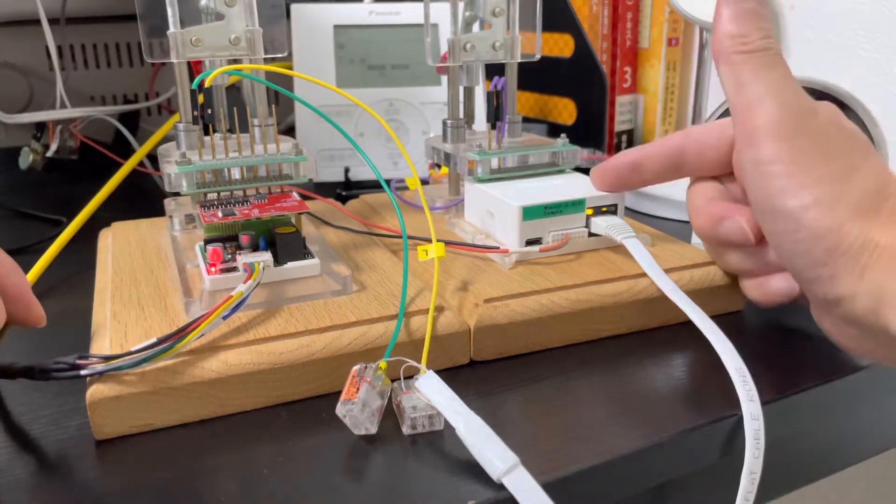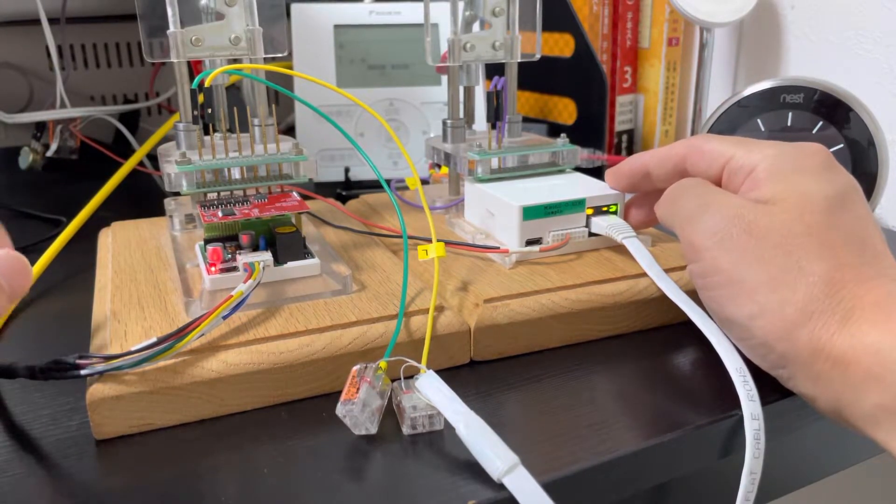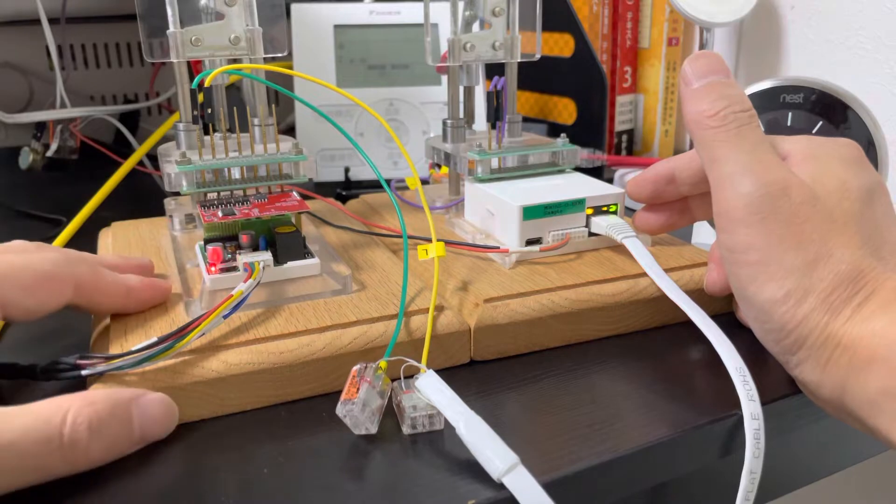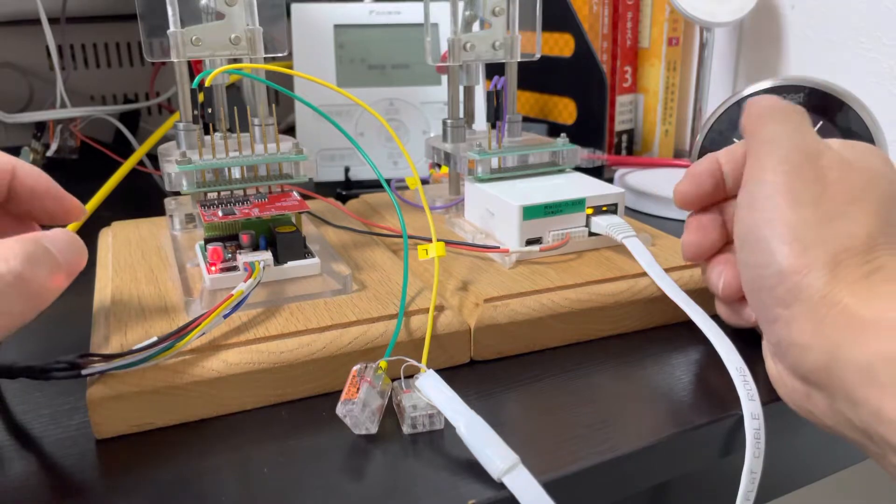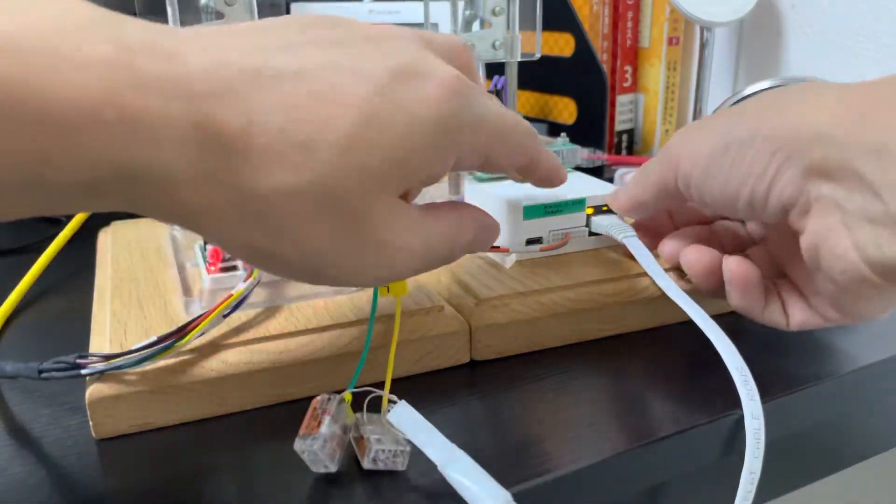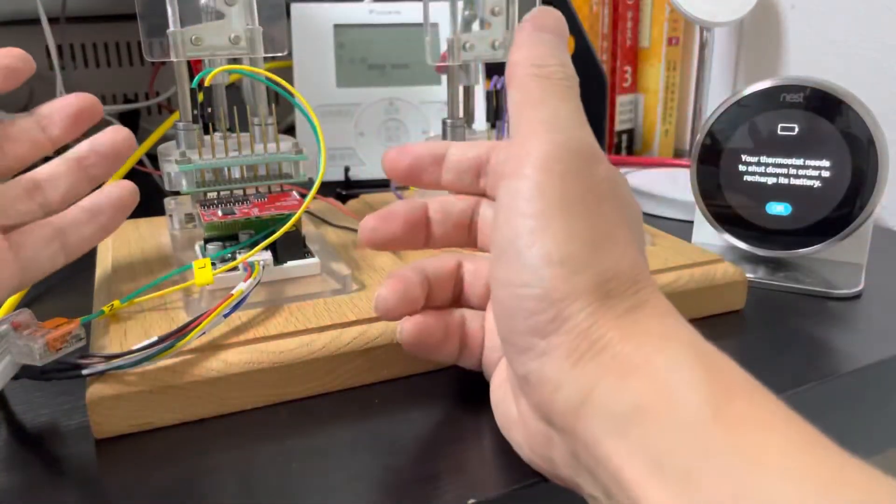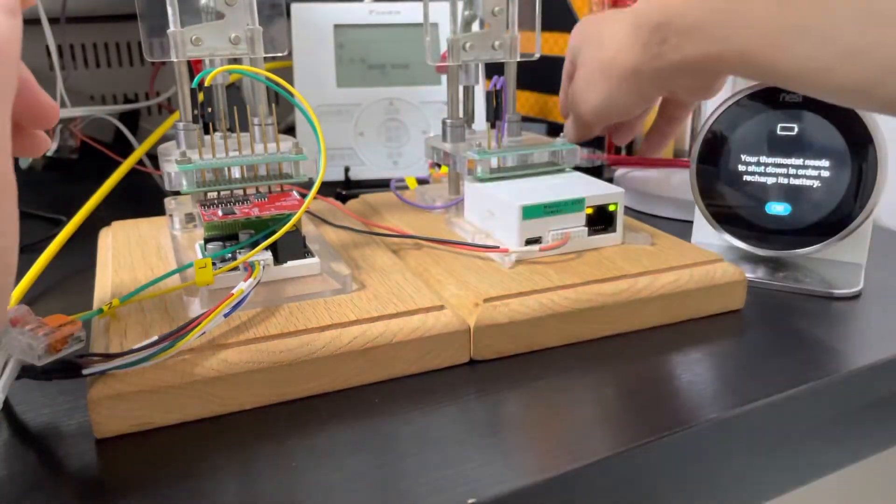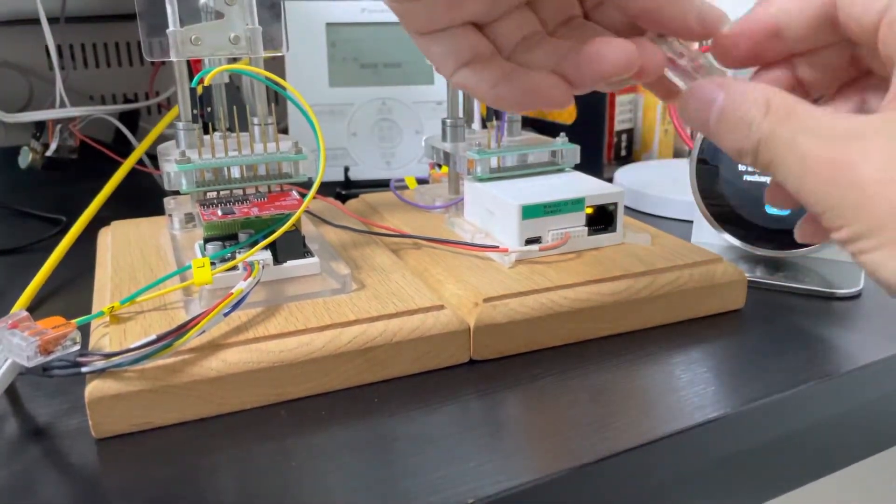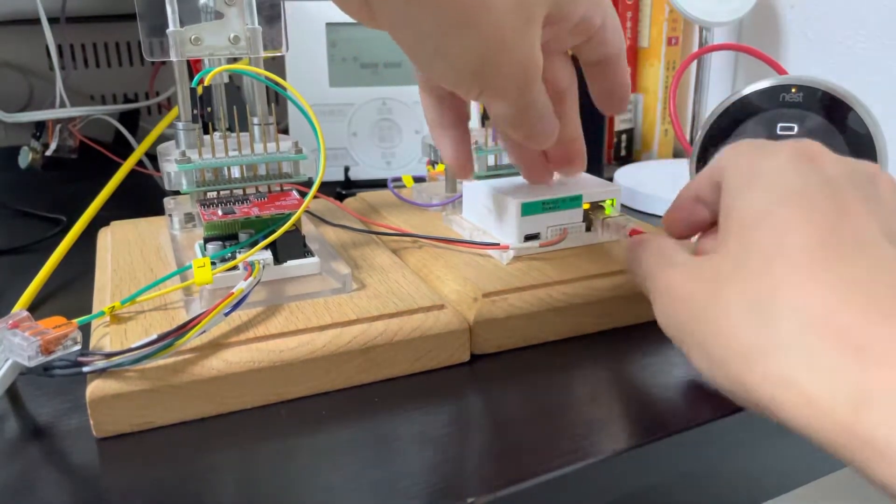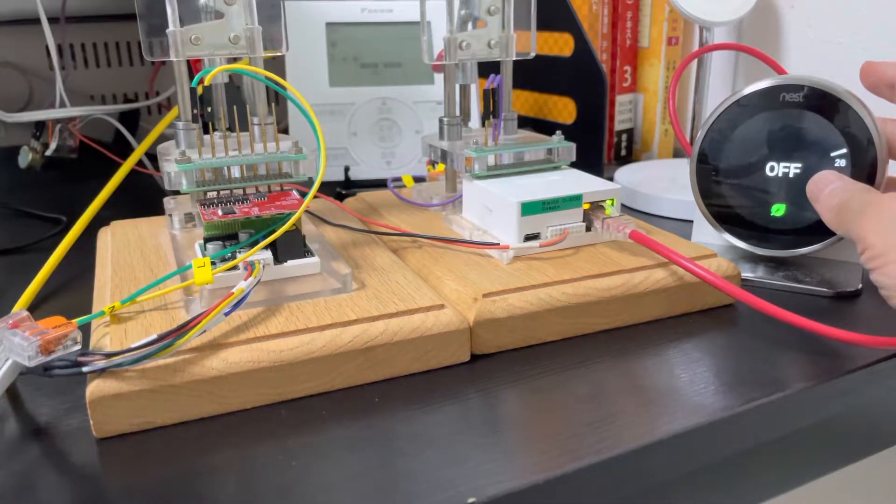So our master adapter can work with a slave adapter. It also can work alone, such as if we do not connect with a slave, we connect with the nest directly. It will still be controlled.